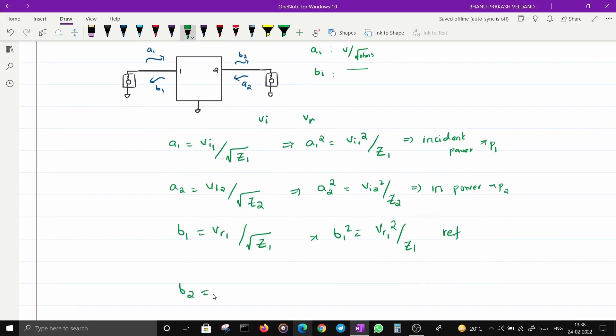Squaring B2 will give me V_R2^2 / Z2, which is reflected power.